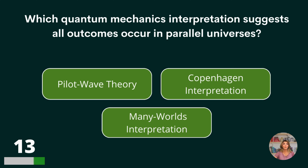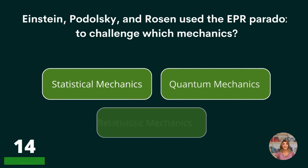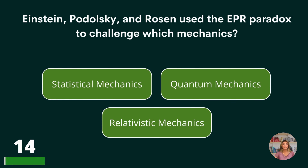Which quantum mechanics interpretation suggests all outcomes occur in parallel universes? Pilot wave theory, Copenhagen interpretation, or many worlds interpretation? Many worlds interpretation.